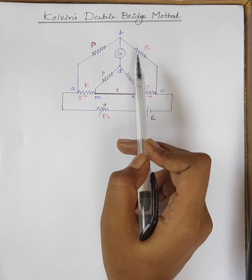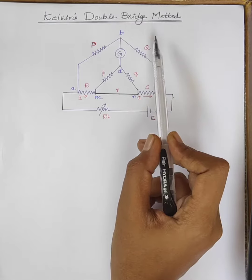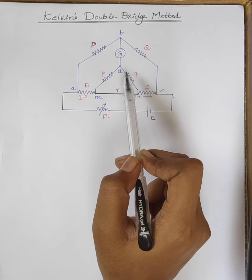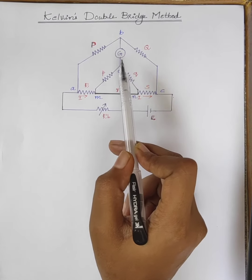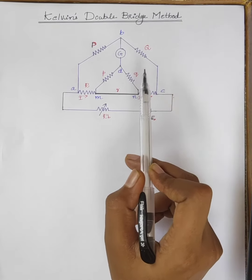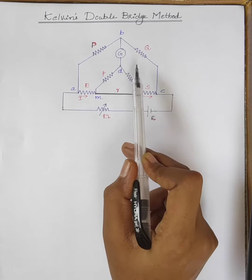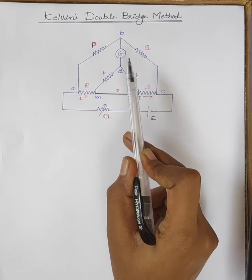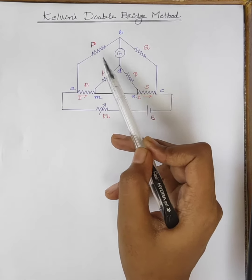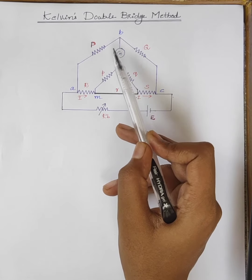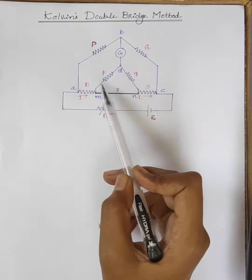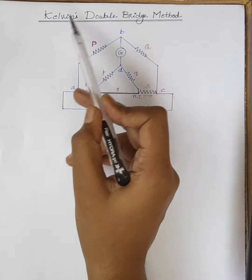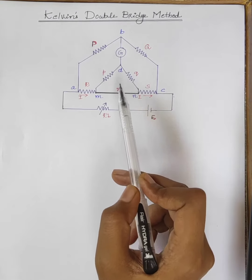Hello students. Today's topic of discussion is Kelvin's double bridge method. Kelvin's double bridge is a modification of the Wheatstone bridge and it is used for the measurement of low resistance. The Wheatstone bridge cannot be used to measure low resistance because the connecting wire resistance comes into the picture and affects the measurement, introducing considerable errors. So we use Kelvin's double bridge for the measurement of low resistance.